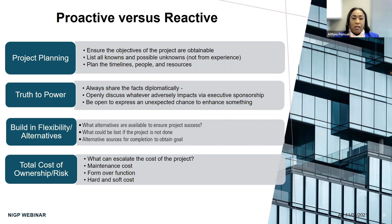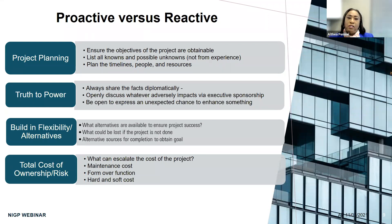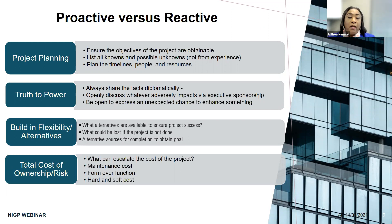Be open to express unexpected chances to enhance something, because people want to hear what goes well and what can happen that impacts them. Learn about what executives are being judged on. If a city manager is hired and they're being judged on improving infrastructure, do everything you can to help the department get resources and contracts in place. That investment will serve the procurement department well in the long run. And build in flexibility and alternatives because there will be adversity. Always understand what projects are active and what suppliers are on property in case something goes wrong.